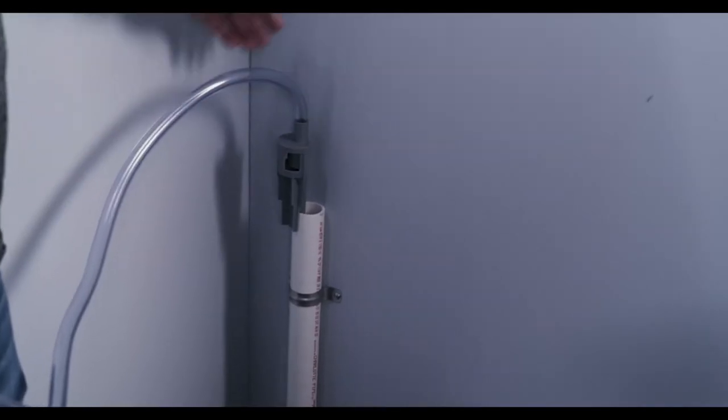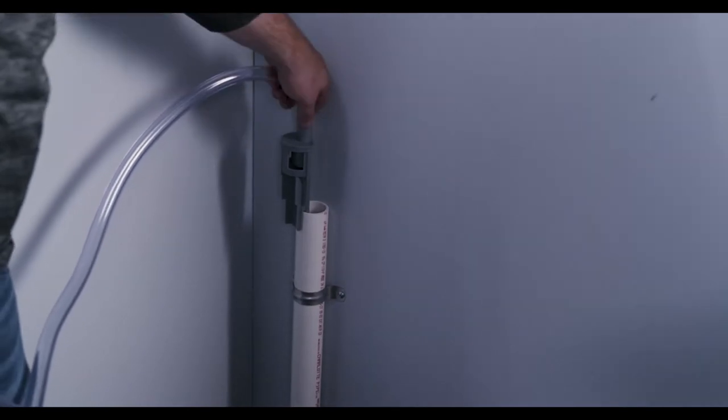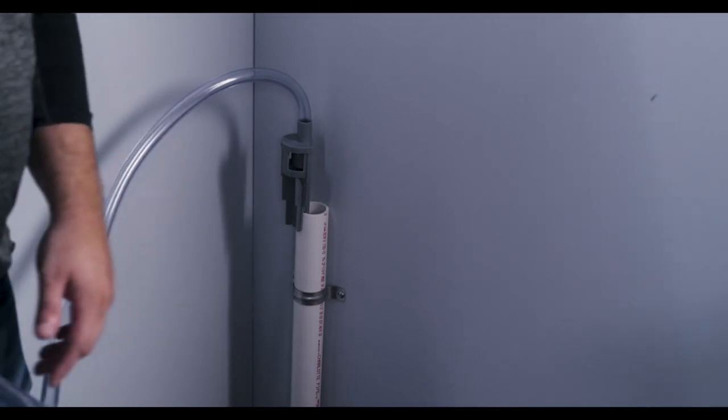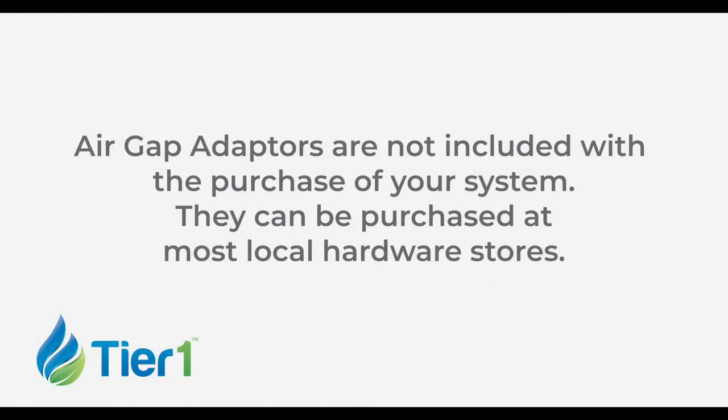Secure the other end of the drain tubing over a floor drain or other suitable drain, leaving an air gap or using a drain air gap adapter. Always leave about one and a half inches between the end of the hose and the drain. This gap is necessary to ensure there won't be any backflow of sewer water into the softener.